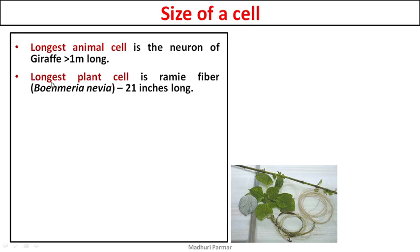The longest plant cell is ramifiber, from the plant whose scientific name is Bohmeria nivea. The long thread-like structure you see is one cell, and that cell is 21 inches long. For reference, if you have a 20-inch waist, you could wear this one cell as a belt. Remember the name is ramifiber, from the species Bohmeria nivea.